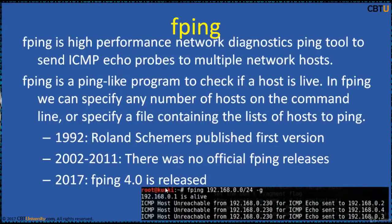FBing is a high-performance network diagnostic tool to send ICMP echo probes to multiple network hosts. FBing is a ping-like program to check if a host is alive. We can specify any number of hosts on the command line or specify a file containing the list of hosts to ping. The history of FBing: in 1992, Roland Schemers published the first version. From 2002 to 2011, there were no official FBing releases. In 2017, FBing 4 was released.